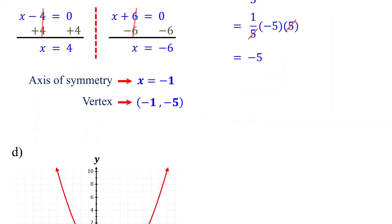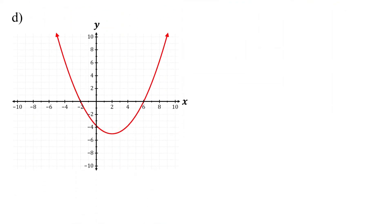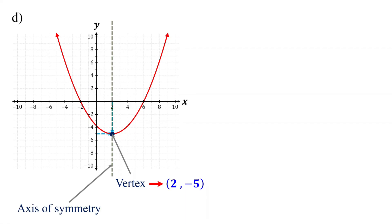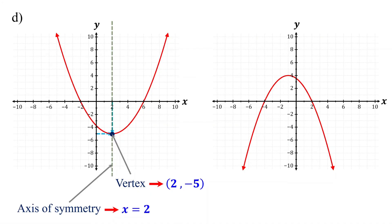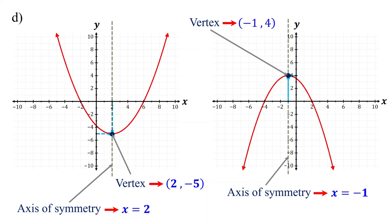How do you find the vertex and axis of symmetry from graphs? The parabola in this graph is opening upward, so the vertex is its lowest point. To find it, identify the x and y-coordinates of this point. The x-coordinate is 2 and the y-coordinate is negative 5. Therefore, the vertex is 2 comma negative 5, and the axis of symmetry is x equals 2. For the next graph, the parabola opens downward, so the vertex is its highest point. The x-coordinate is negative 1 and the y-coordinate is 4. Therefore, the vertex is negative 1 comma 4, and the axis of symmetry is x equals negative 1.